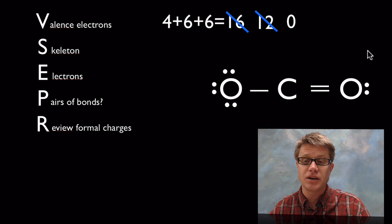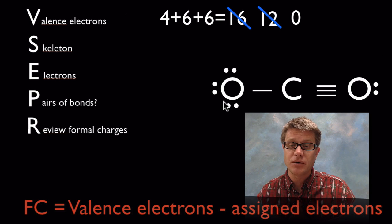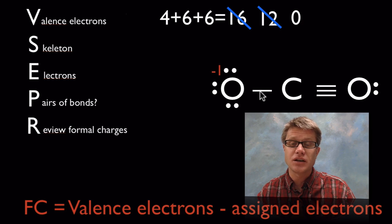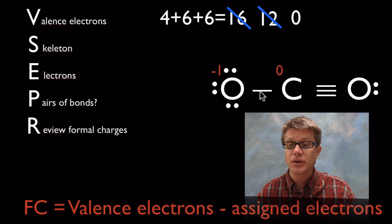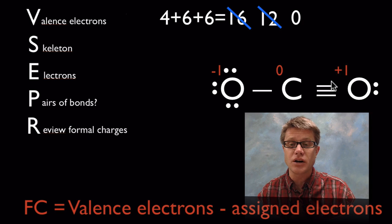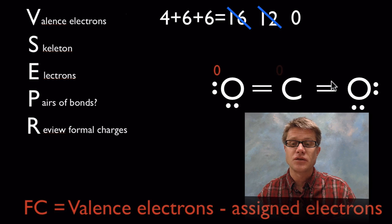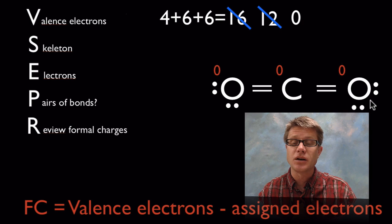So I can do pair switching. After switching, carbon looks happier. Reviewing formal charges left to right: oxygen has six valence electrons minus one, two, three, four, five assigned — giving a formal charge of negative one. Carbon is zero, and the other oxygen has a formal charge of plus one. So this isn't a great model. I can switch and get a pair on each side, giving formal charges of zero, zero, and zero. That's the better structure for carbon dioxide.